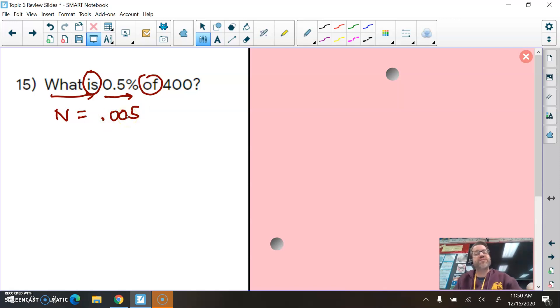Or five-thousandths of 400. So times 400. So what does N equal? Well, it looks like that's going to equal two. N equals two. So what is 0.5% of 400? What is one-half of a percent of 400? One percent of 400 would be four. So a half a percent would be half of that. And half of four is two. So my answer does make sense. N will equal two. But you can use your calculators to multiply 0.005, or five-thousandths, times 400.